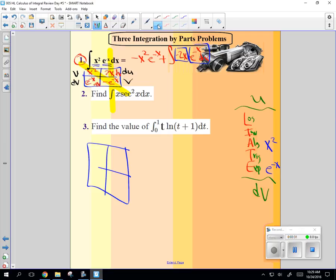This will be U. And this will be DV. This will be V. This will be DU. And we're going to put negative 2x here. E to the negative x here. Well, this will still be negative e to the negative x. And this will just be negative 2.